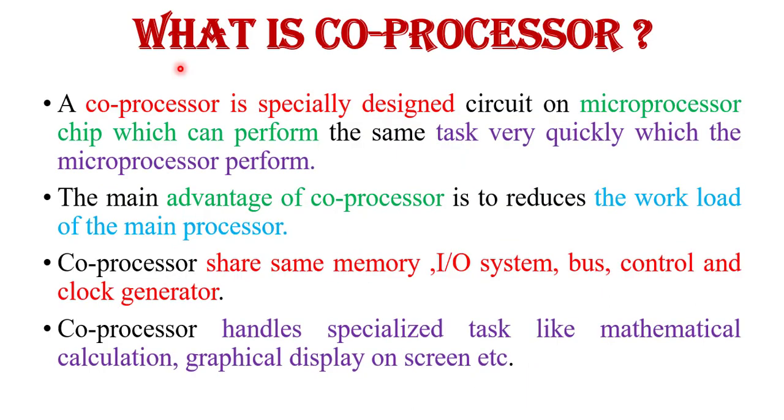First we know about what is coprocessor. A coprocessor is a special type of processor or secondary processor that is a specially designed circuit on a microprocessor chip which can perform the same task very quickly which the microprocessor perform. It means a coprocessor is just like a microprocessor.